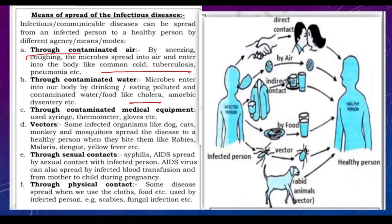Through contaminated medical equipment such as syringes, thermometers, and gloves. Through vectors — some infected organisms like dogs, cats, monkeys, and mosquitoes spread diseases like rabies, malaria, and dengue fever. Through sexual contact — AIDS and syphilis. Through physical contact — fungal infections and scabies. These diseases are also shown in the NCERT picture.